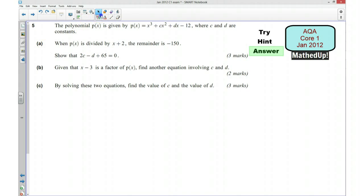Okay, for part a, we're told that when we divide this function by x plus 2, the remainder is negative 150. So I can use that by saying, well, if I put negative 2 into this function, I get negative 2 cubed plus negative 2 squared times by c plus negative 2 times d minus 12. And the answer to that is going to be negative 150.